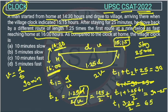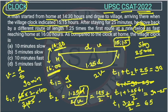Solving for t1: t1 = 65 × 2 / 3.25. Simplifying — 65 divided by 3.25 gives 20, and 20 × 2 = 40. So t1 = 40 minutes. This is the time taken to travel from home to the village.